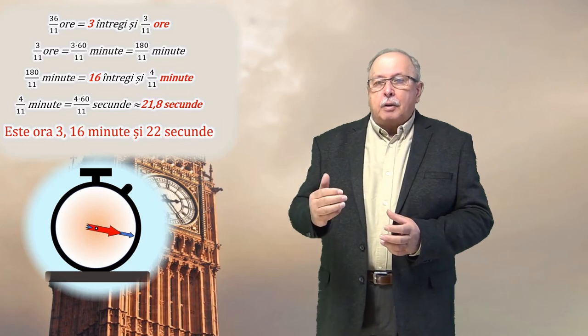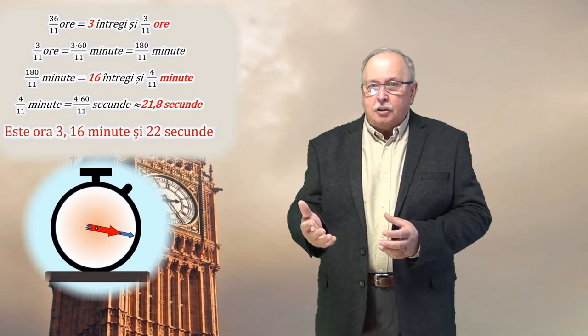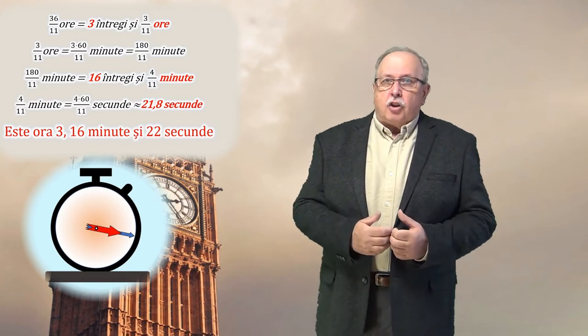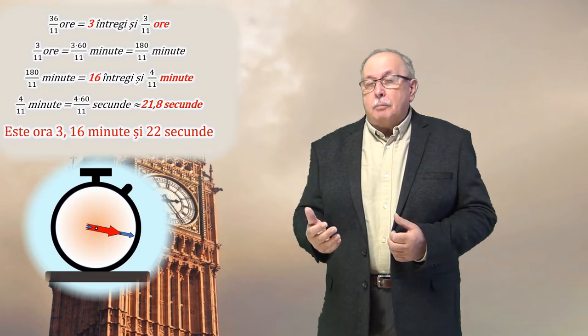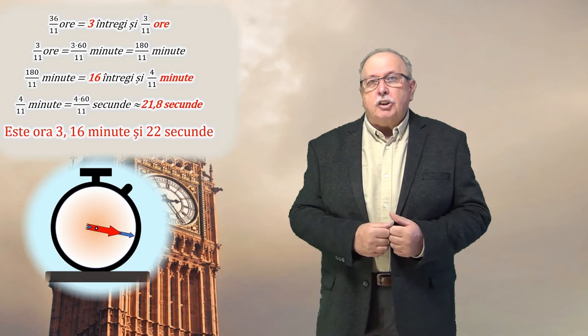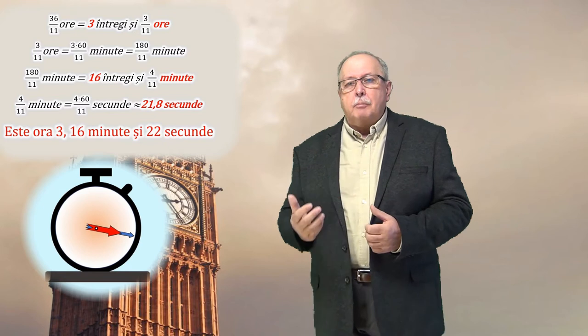Rămân trei supra unzprezece ore. Pentru că rămâne rest trei, după ce împart treizeci și șase la unzprezece. Trei supra unzprezece ore înseamnă câte minute? Păi, înseamnă de șaizeci de ori mai multe. Pentru că într-o oră sunt șaizeci de minute. Și atunci înseamnă că voi avea trei ori șaizeci supra unzprezece minute.